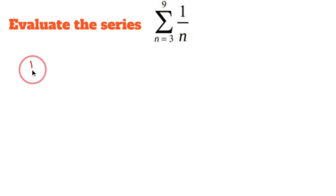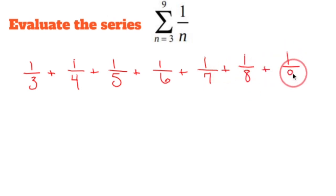So we're going to have 1 over 3 plus 1 over 4 plus 1 over 5 plus 1 over 6 plus 1 over 7 plus 1 over 8 plus 1 over 9.